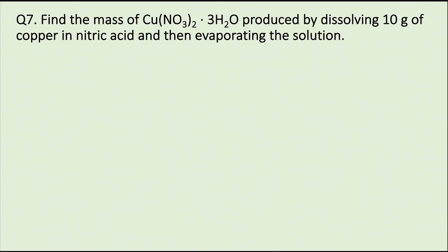Question 7. Find the mass of copper nitrate trihydrate produced by dissolving 10 grams of copper in nitric acid and then evaporating the solution.